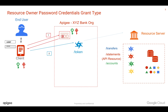Apigee receives these credentials and forwards them to the resource server authentication endpoint, asking whether these credentials are valid or not. The resource server authentication server comes back to Apigee saying it's valid or invalid. If it is valid, then we're going to generate a token.